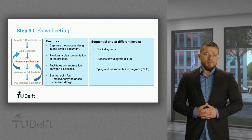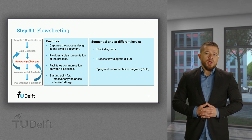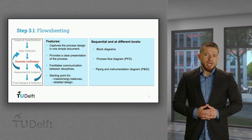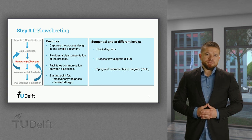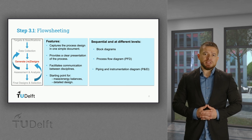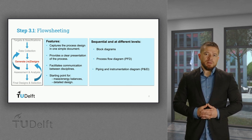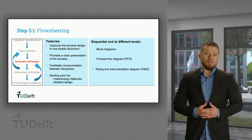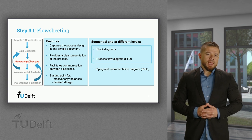There are three main types of flow sheets which are sequentially developed. First, block diagrams, which focus on the key process sections and units and on how materials flow along the process. PFDs, or process flow diagrams, are more specific about the type of processes and they also distinguish all process streams and major utilities requirements, mostly heat and power. The third level, the piping and instrumentation diagram, or P&ID, provides additional information on equipment for instrumentation and control. In this lecture, we will cover the first two levels.